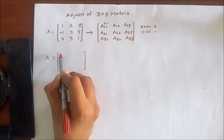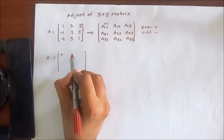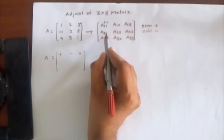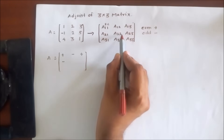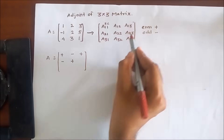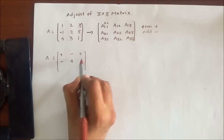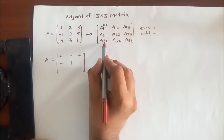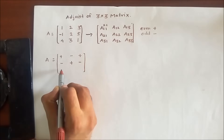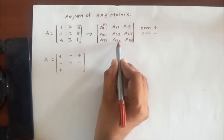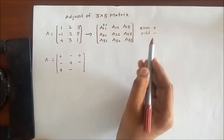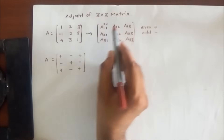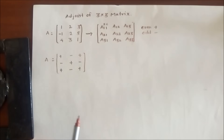Here 1+1=2, which is even, so plus. Then 1+2=3, which is odd, so minus. Then 1+3=4, which is even, so plus. For the second row: 2+1=3, odd, so minus. 2+2=4, even, so plus. 2+3=5, odd, so minus. For the third row: 3+1=4, even, so plus. 3+2=5, odd, so minus. 3+3=6, even, so plus. So we assign these sign conventions when calculating the cofactors.